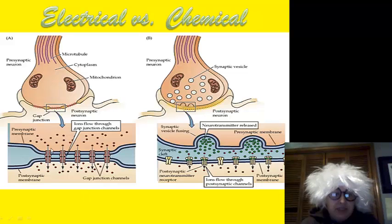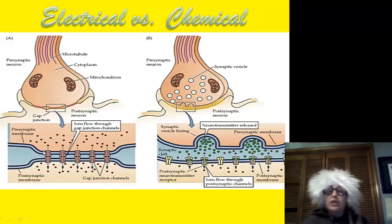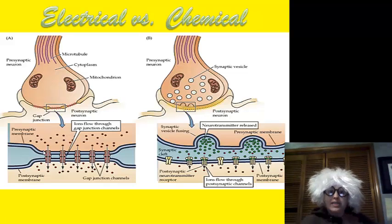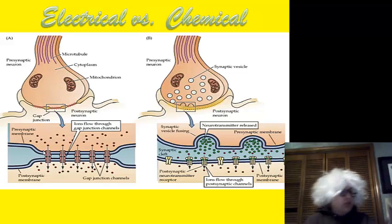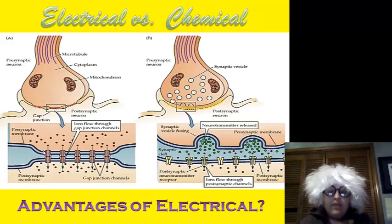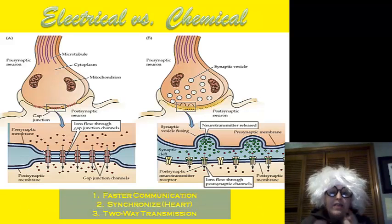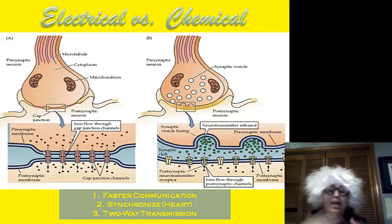The electrical synapses have a gap junction where the ions just flow straight through. This is a two-way process, so one nerve can be talking to the other nerve and the cell can be talking to the nerve and vice versa. There are advantages to electrical: it is faster for communication, we can synchronize, and this is two-way transmission.